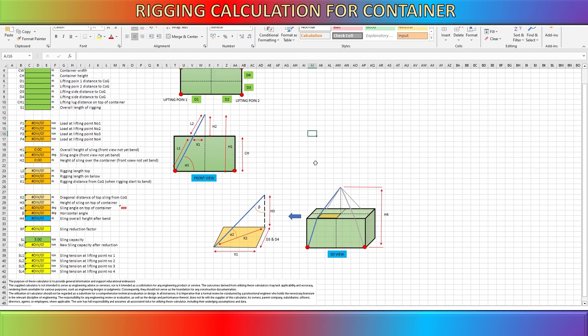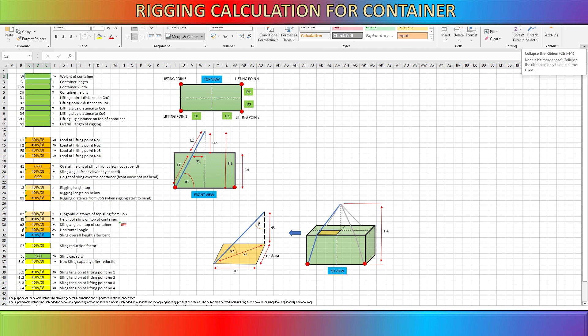Here is the sample spreadsheet I have made to expedite the calculation of this data. Simply input the required values in the green column, and it will automatically compute any necessary information, including the sling reduction factor and other relevant details.